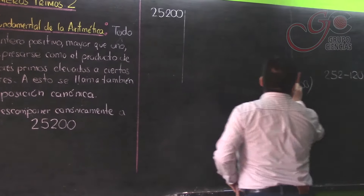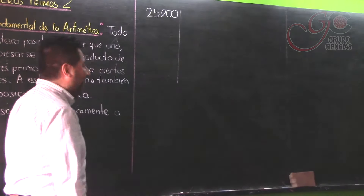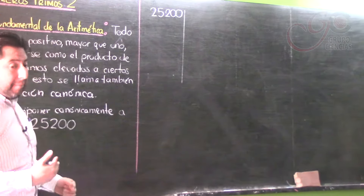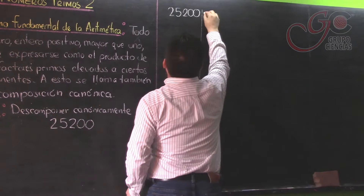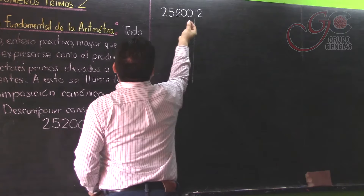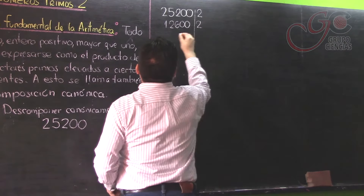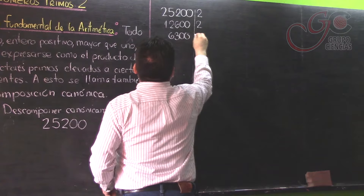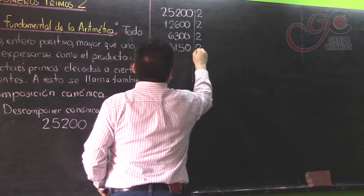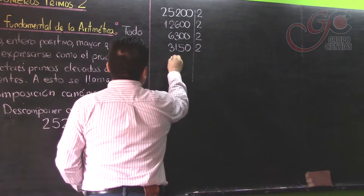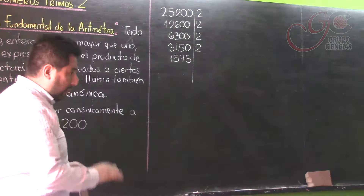En el colegio te recomendaron siempre mantener un orden: que cuando descompongas lo hagas ordenadamente, que empieces por mitad. Mitad de 25.200 es 12.600; mitad de 12.600 es 6.300; mitad de 6.300 es 3.150; mitad de 3.150 es 1.575. Ya no hay mitad, ya agotamos los factores 2.